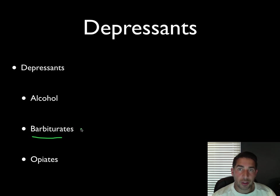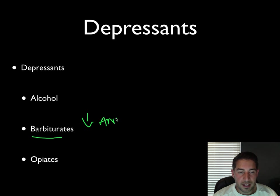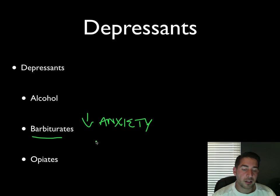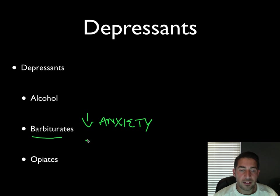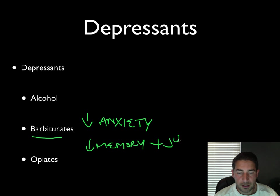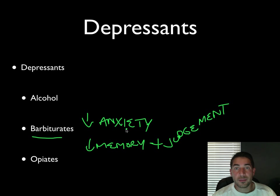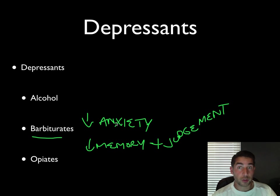Another depressant is barbiturates. Barbiturates are often prescribed medicines that reduce anxiety — they're like tranquilizers. Examples include Nembutal, Seconal, and Amytal. They reduce anxiety, so if you get nervous your doctor may prescribe a barbiturate. A negative of barbiturates is that they impair your memory, just like alcohol, and also impair your judgment. You have to be careful when taking barbiturates and driving or operating heavy machinery, because your reaction time goes down.